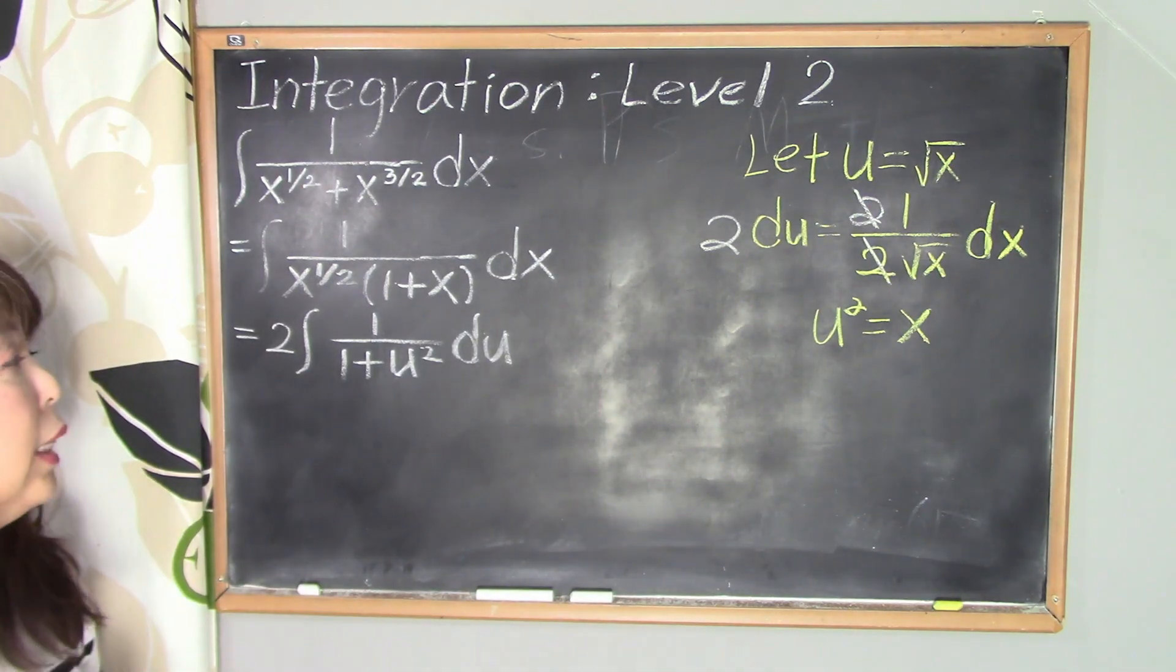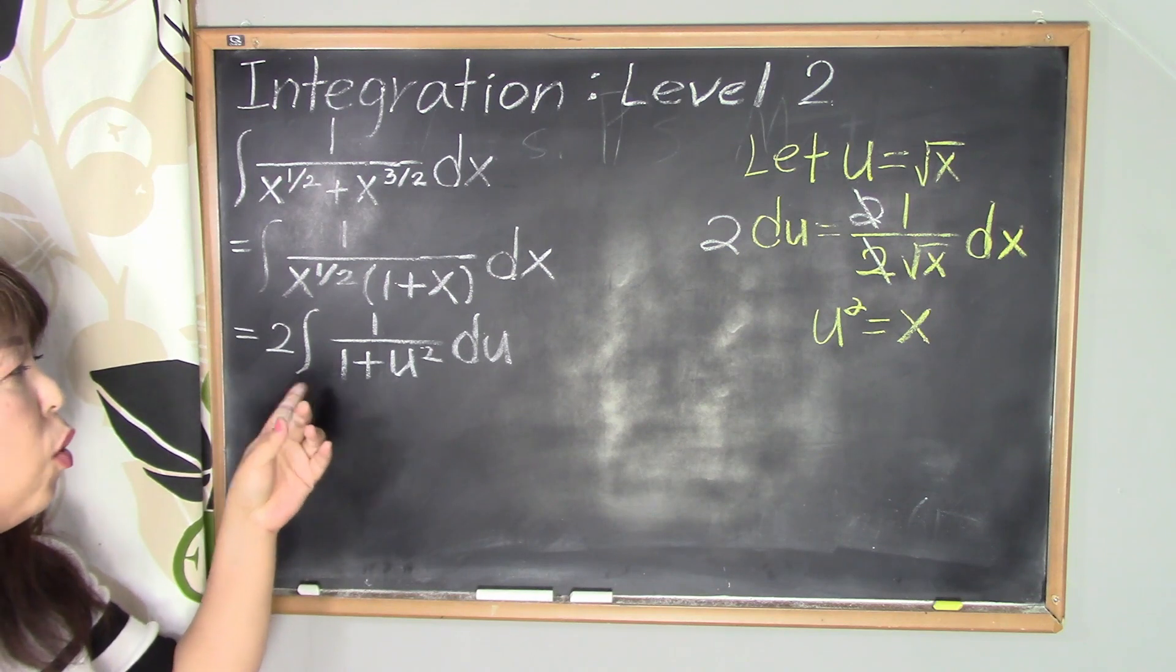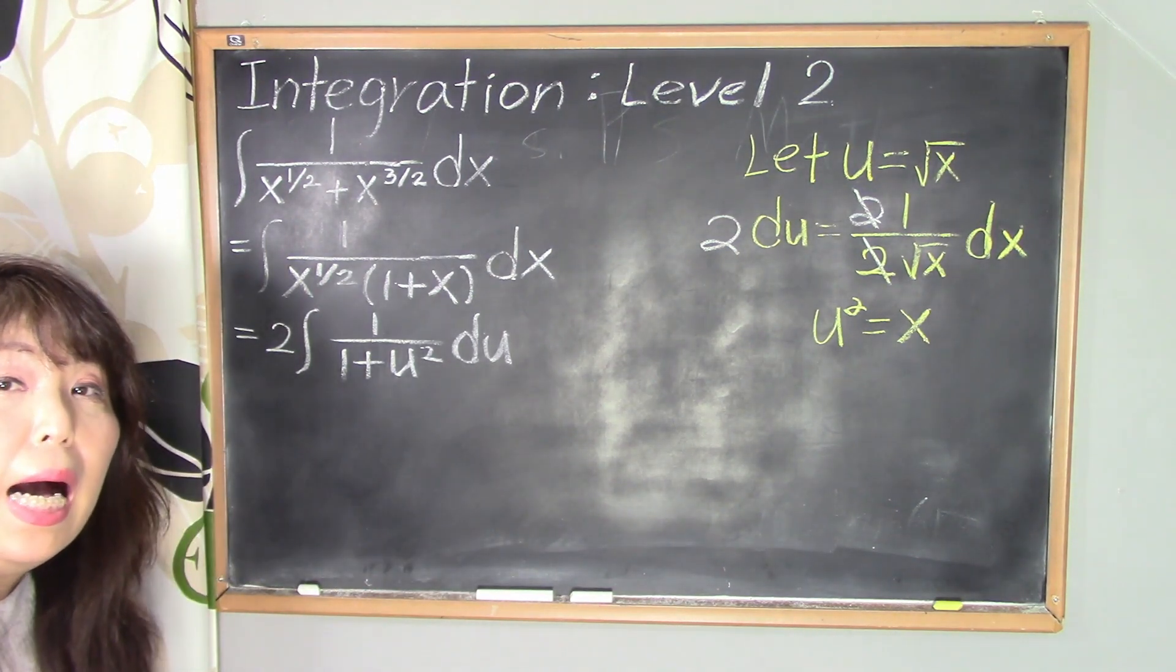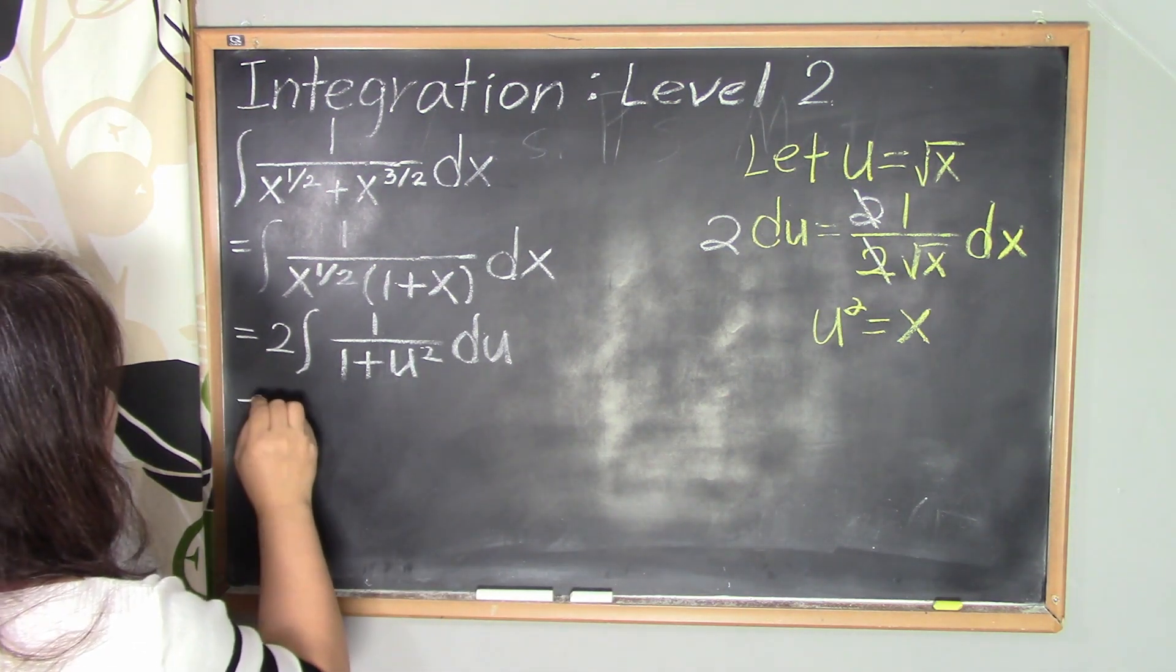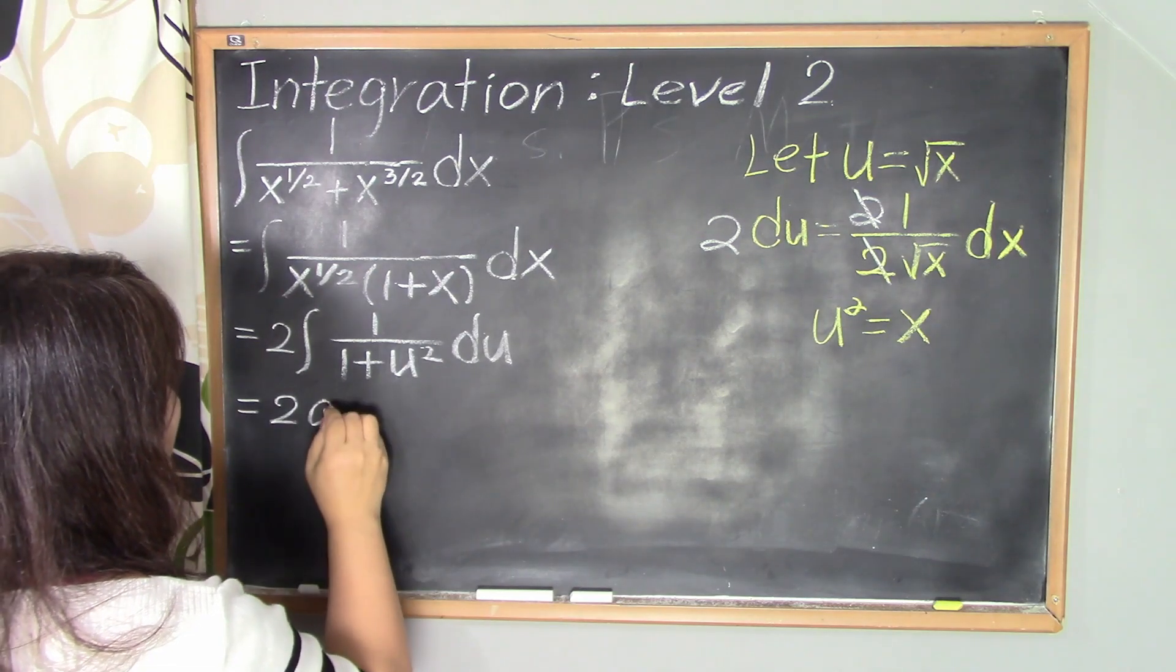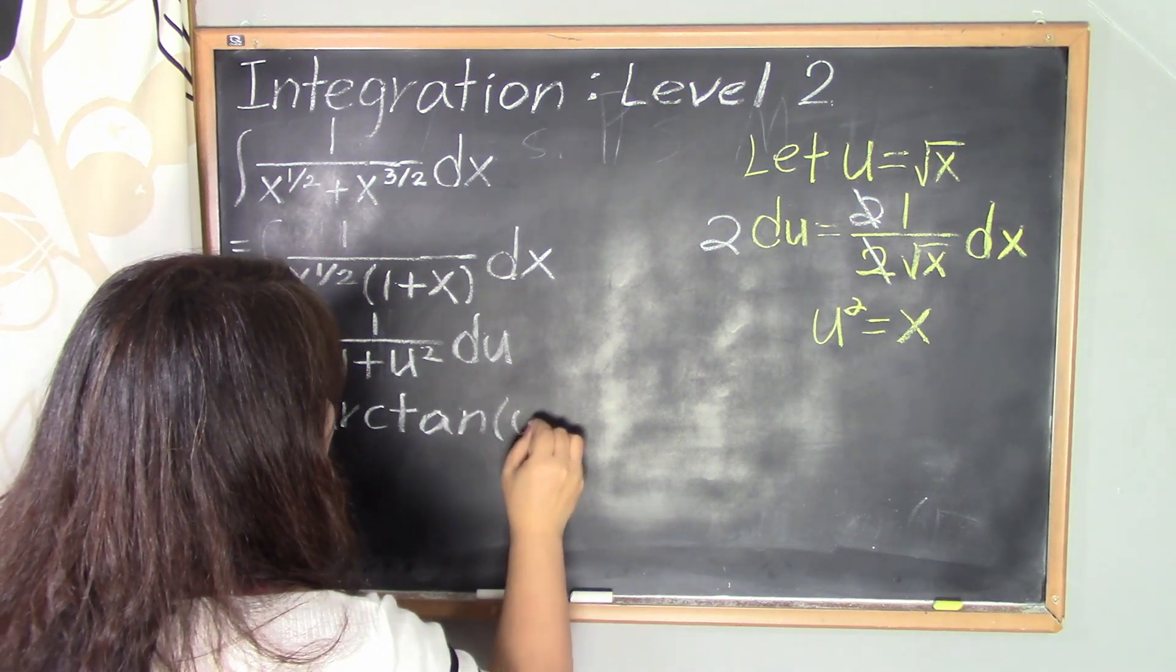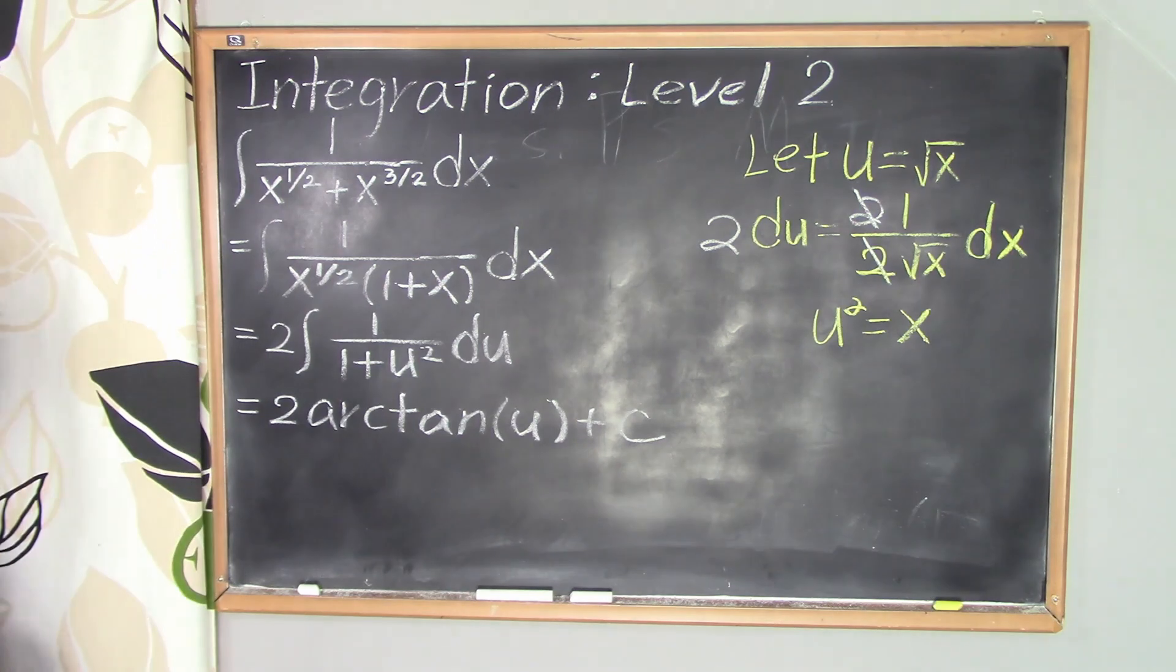So now we have to integrate 1 over 1 plus u squared. So that is arctangent of u. This is equal to 2 times arctangent of u plus c.